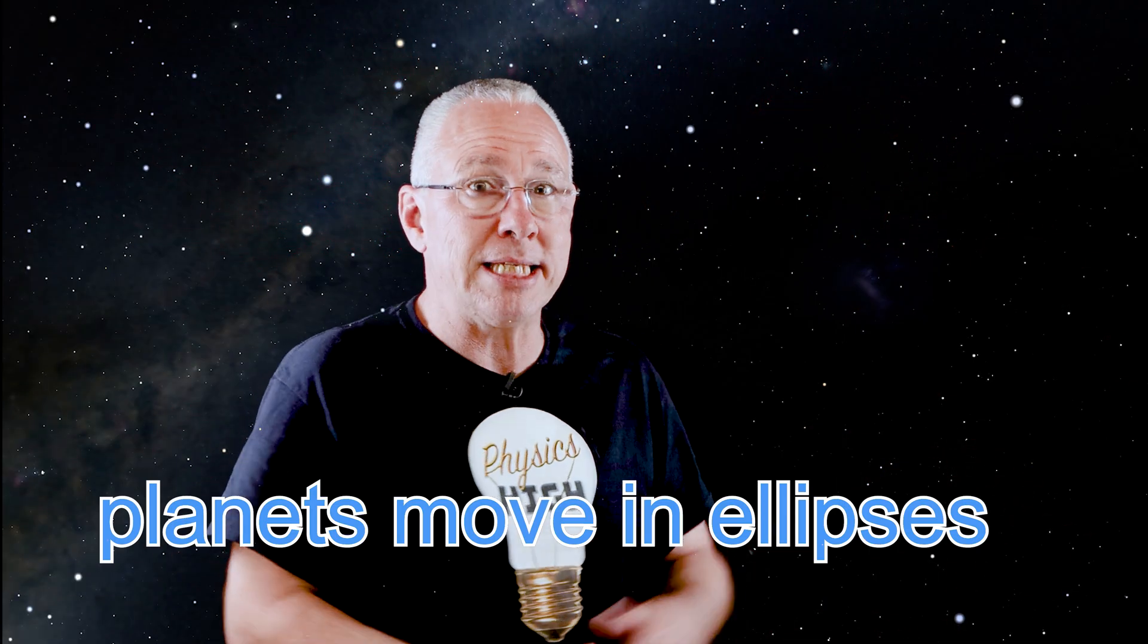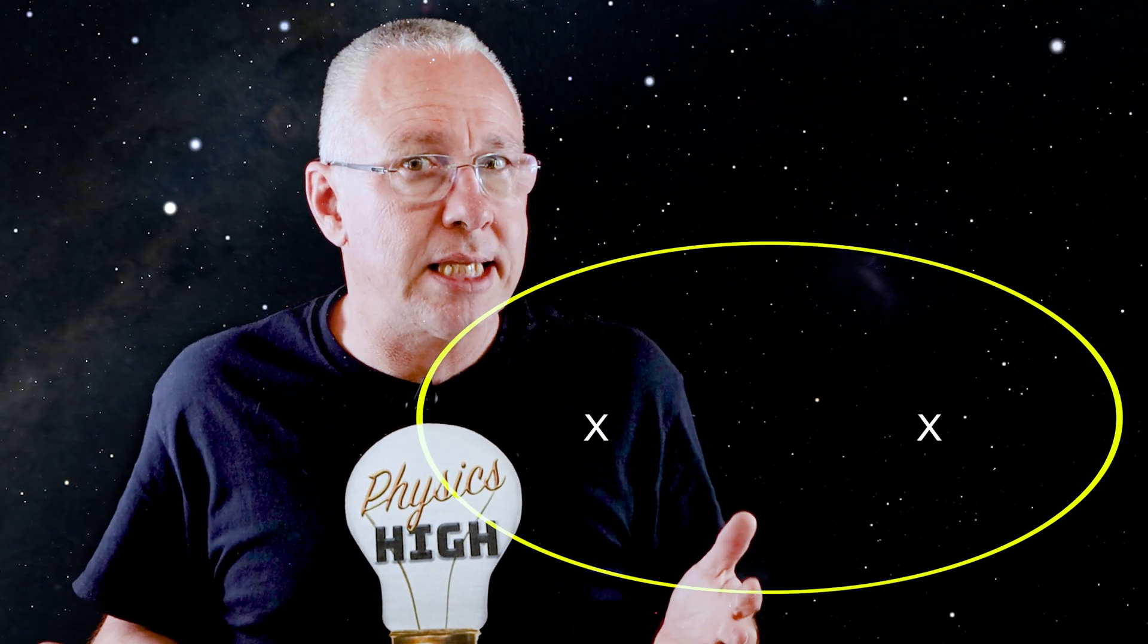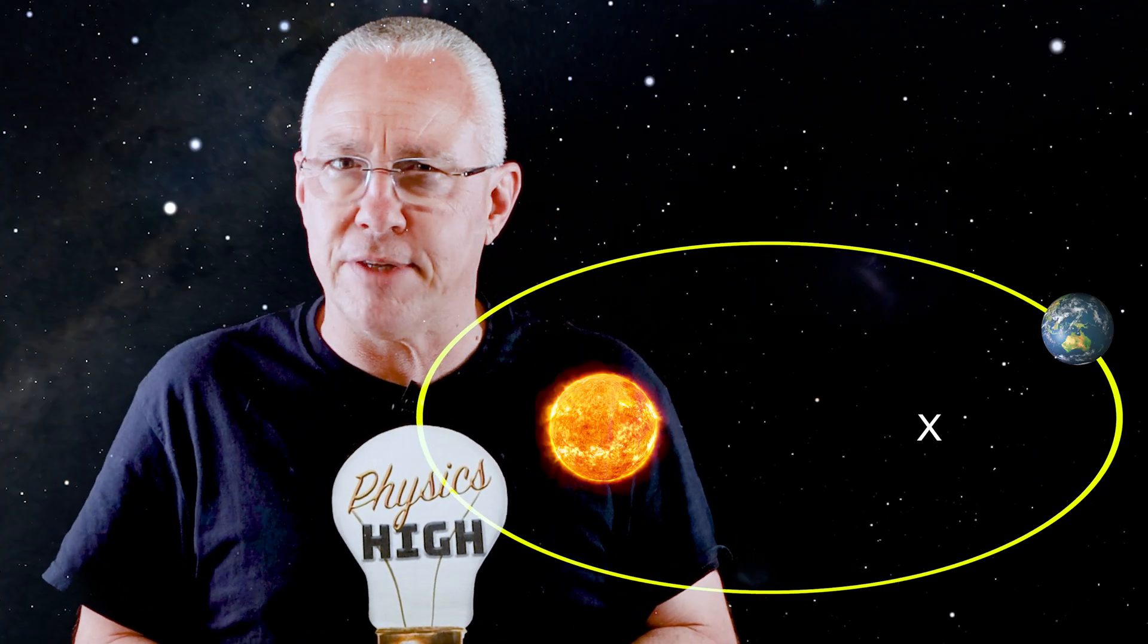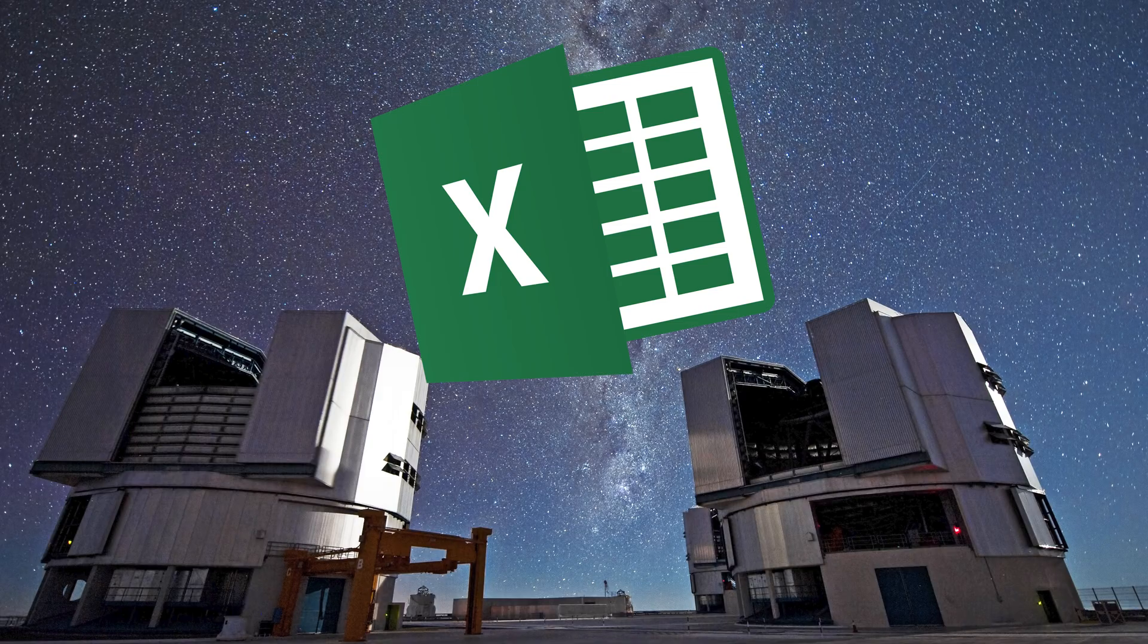An ellipse is basically a circle that got sat on. Slightly stretched, with the Sun sitting at one focus instead of the centre. Now, why didn't anyone notice before? Well, the difference between a circle and an ellipse in the planetary sense is tiny. And ancient astronomers didn't exactly have telescopes or Excel spreadsheets.